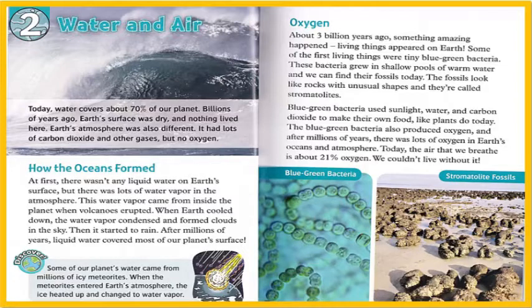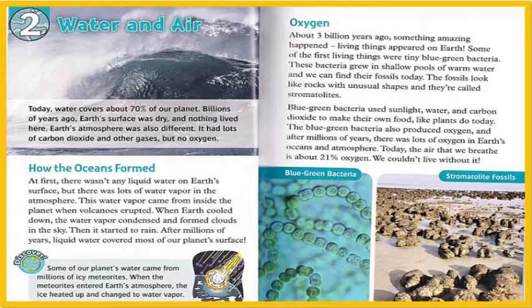Oxygen. About three billion years ago, something amazing happened — living things appeared on Earth. Some of the first living things were tiny blue-green bacteria. These bacteria grew in shallow pools of warm water, and we can find their fossils today. The fossils look like rocks with unusual shapes, and they're called stromatolites.